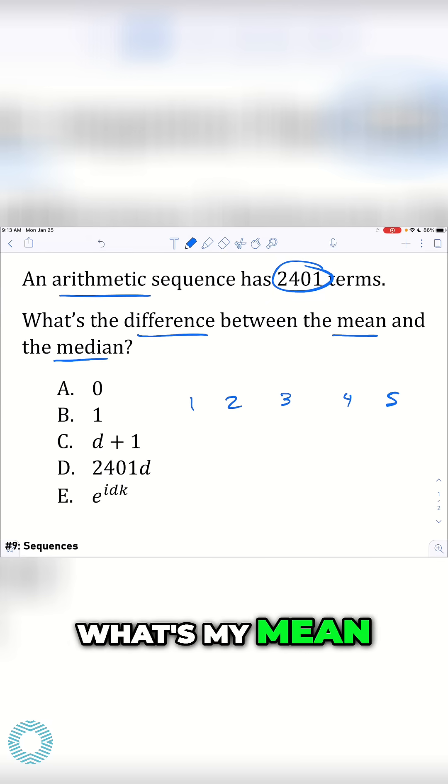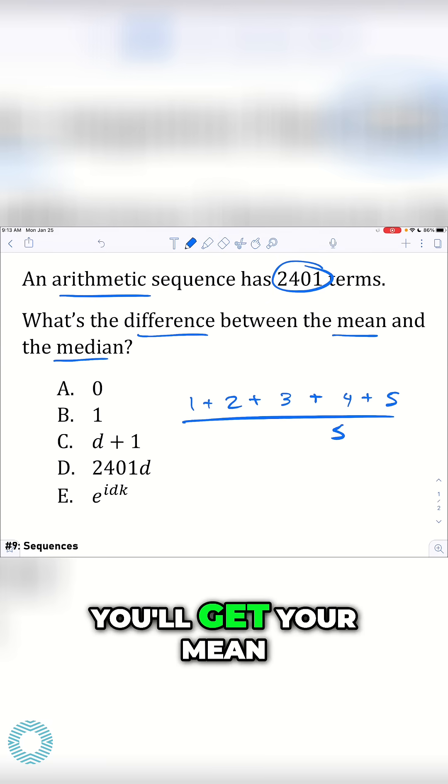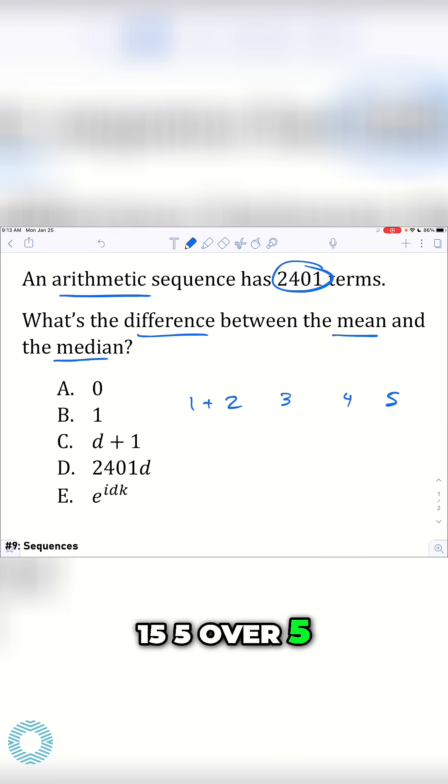Now, what's my mean? It's just going to be three. If you add all these together and you divide by five, you'll get your mean value to just be 15 over five, which is going to be three.